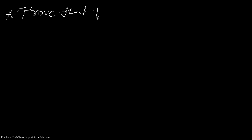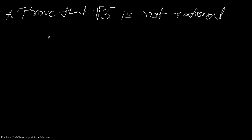Suppose we have to prove that root 3 is not rational. Proof that root over 3 is not rational. So how do we go with this problem? We have to prove whether this root 3 is rational or not — it is not rational, and that we have to prove.